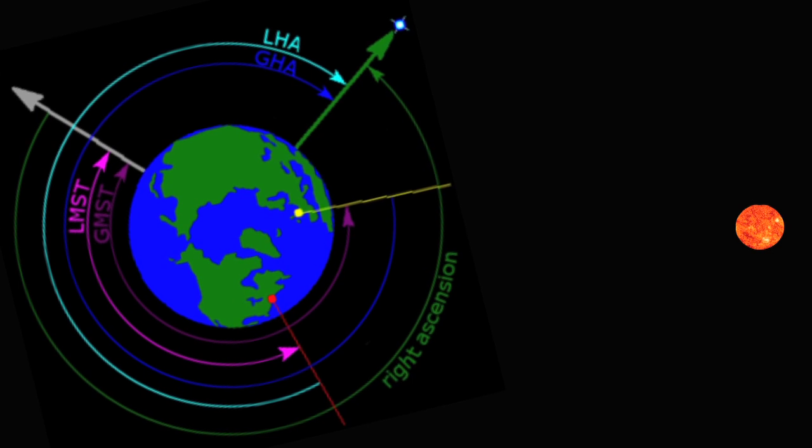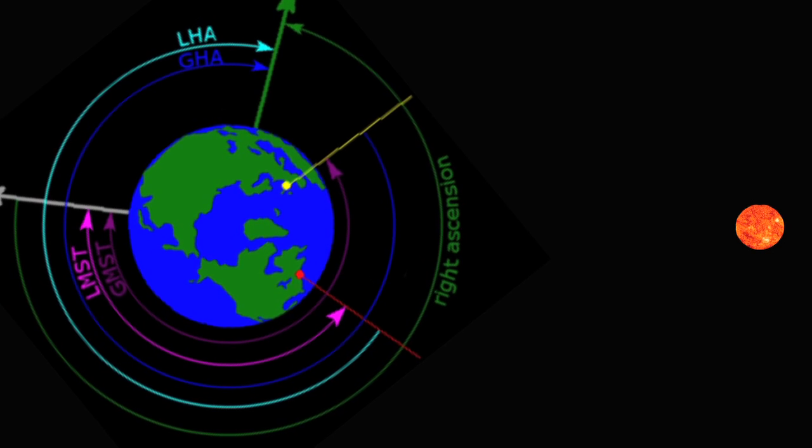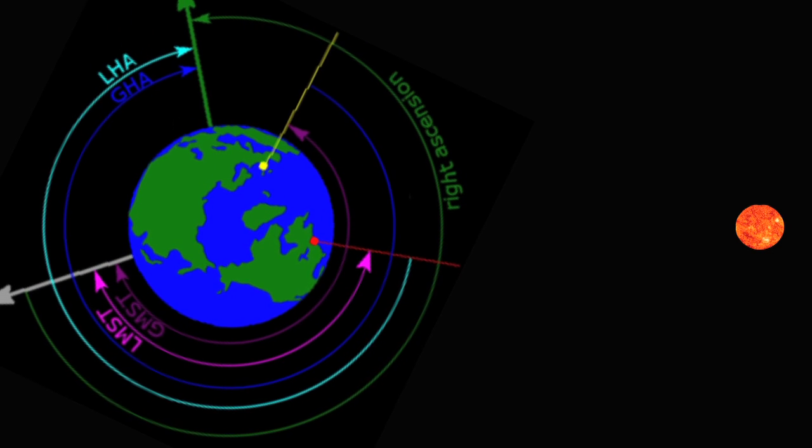So let me first define what I mean by the hour angle of the Sun. This is the angle that the Earth would have to rotate so that the Sun appears to be at high noon.